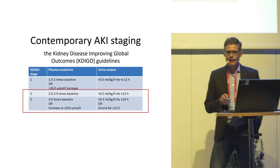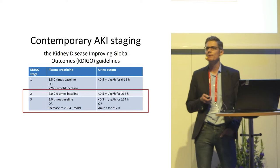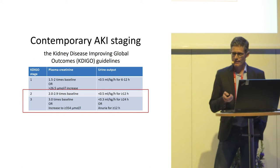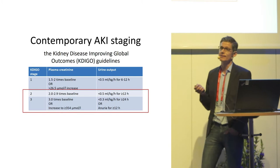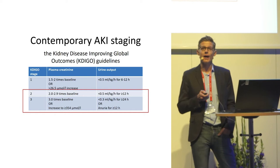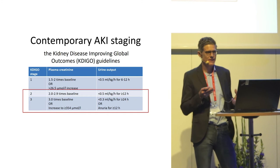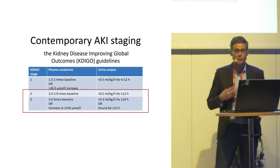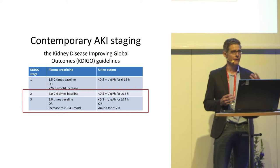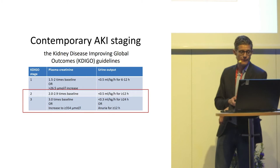Luckily, in recent years, the definition of acute kidney injury has become more uniform thanks to the KDIGO guidelines. They define moderate AKI — stage 2 — as a doubling of creatinine or oliguria for more than 12 hours, whereas stage 3 is a three-fold increase in creatinine or more severe and persistent oliguria. These definitions and staging of AKI have now been used in more recent trials to understand if early treatment is better than watchful waiting.